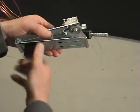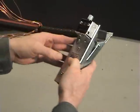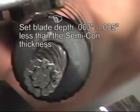Verify that the blade lever is in the square cut position and check the blade depth on a scrap piece of cable if one is available, or by visually checking the blade at the end of the cable. The blade depth should be set to approximately 3 to 5 thousandths less than the Semi-Con thickness.